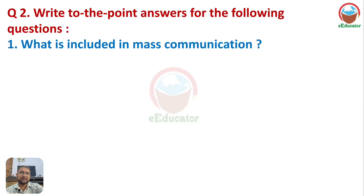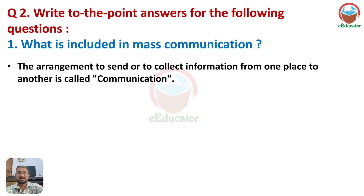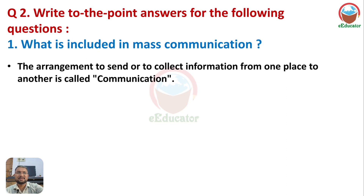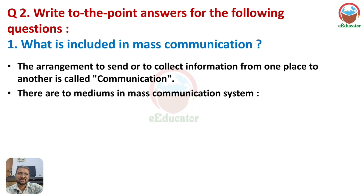Question: What is included in mass communications? The arrangement to send or collect information from one place to another is called communication. There are two mediums of mass communication: first, print media — which includes newspapers, magazines and pamphlets; second, electronic media.